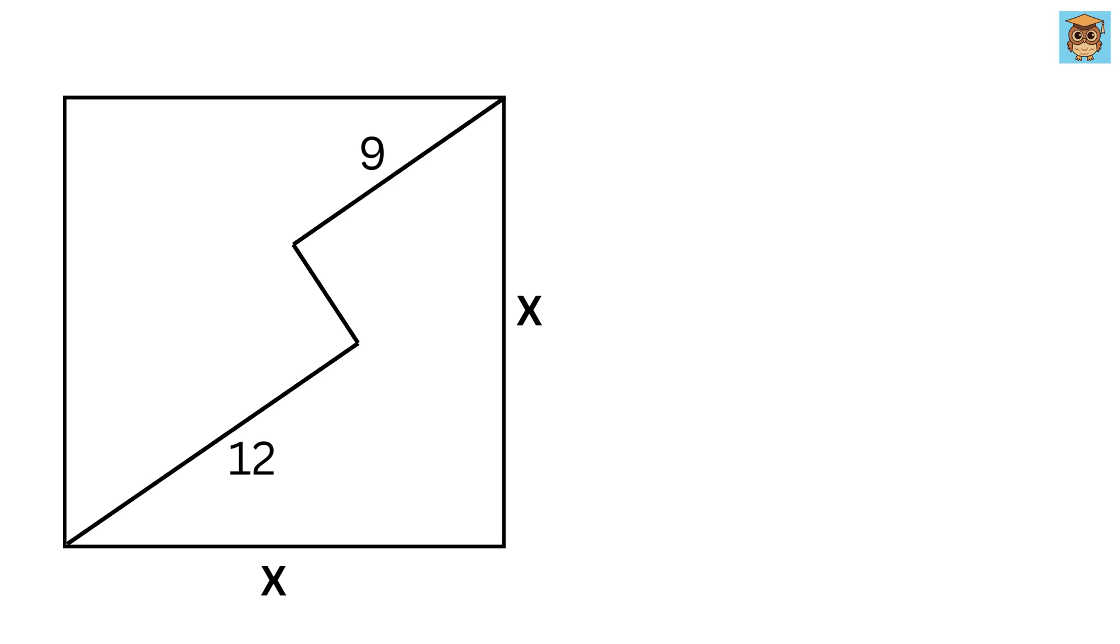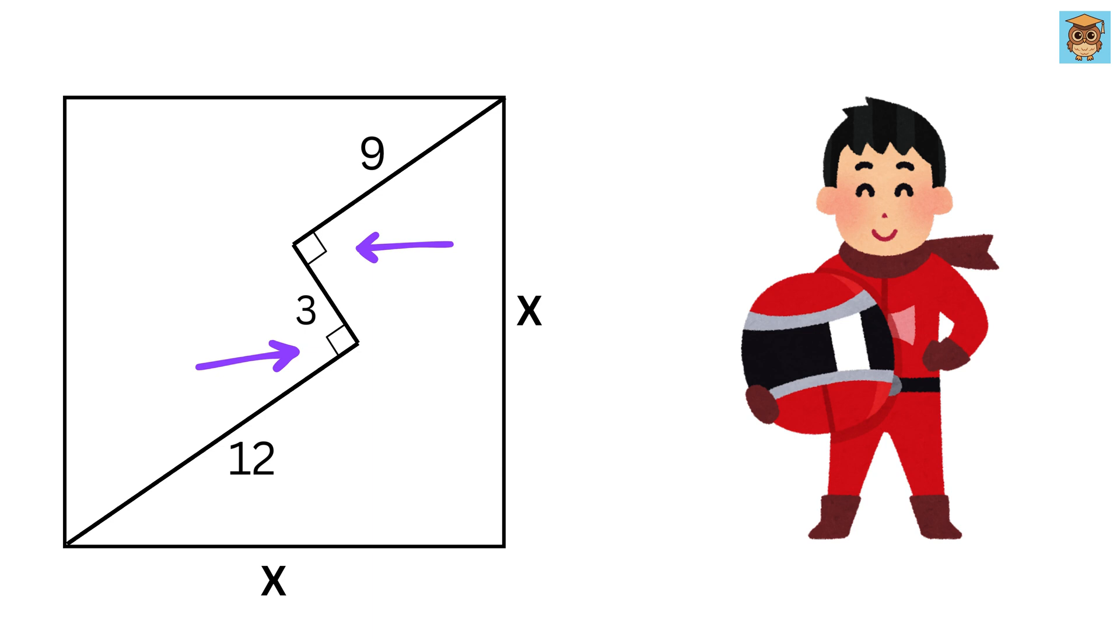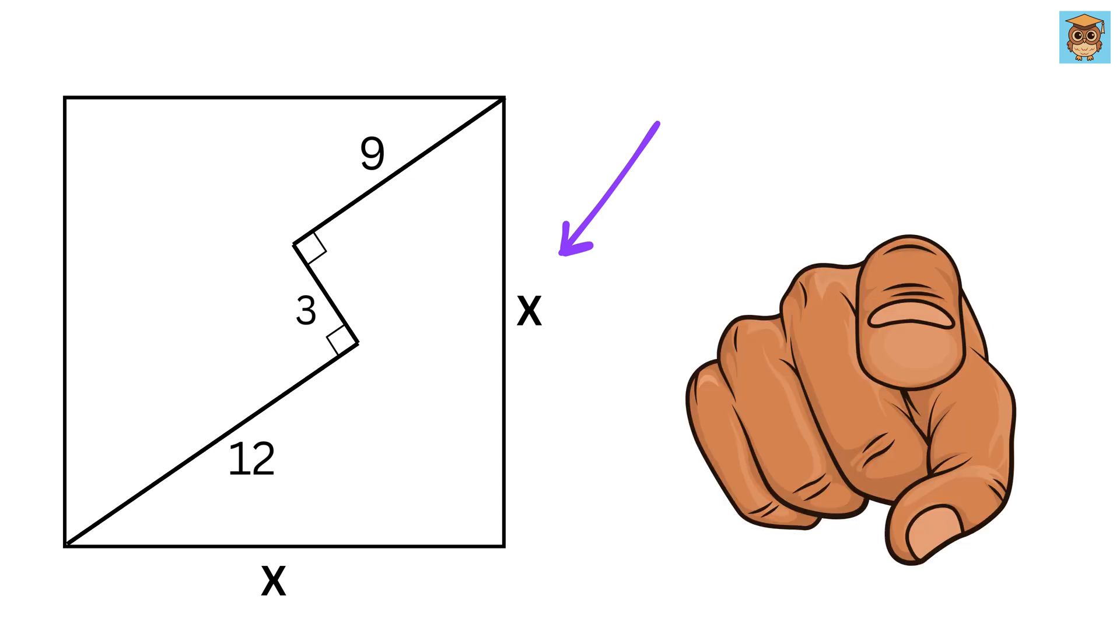Now we connect both these lines such that this piece is of length 3 units and both of these angles are right angles or 90 degrees. Our mission, should you choose to accept it, is to find the value of x.